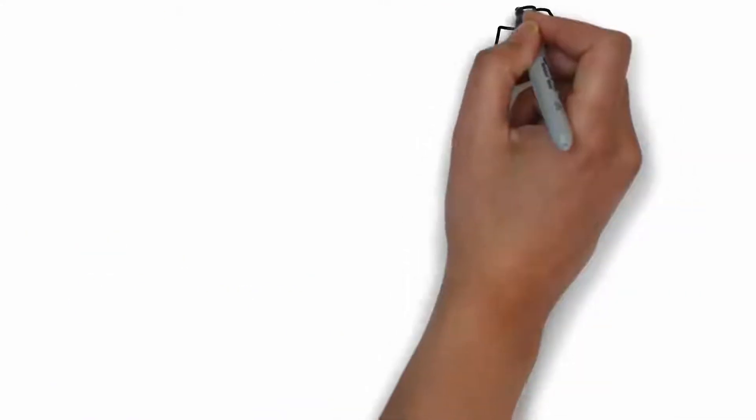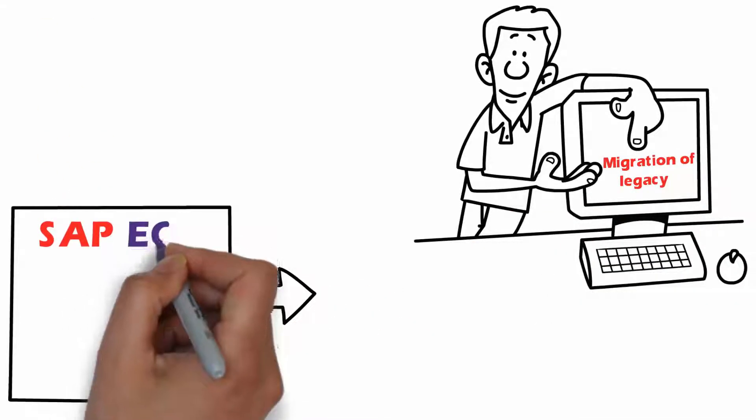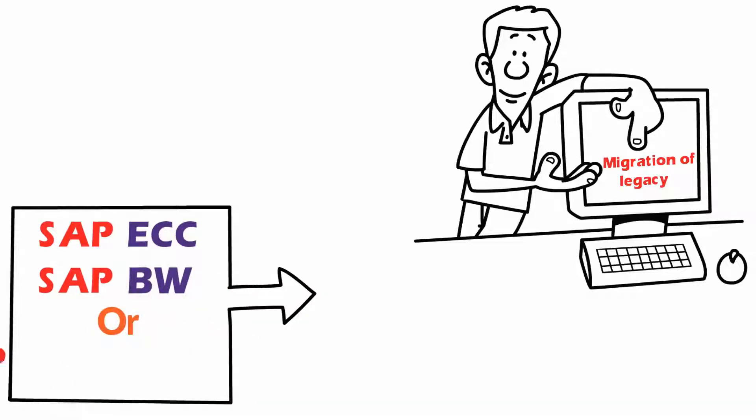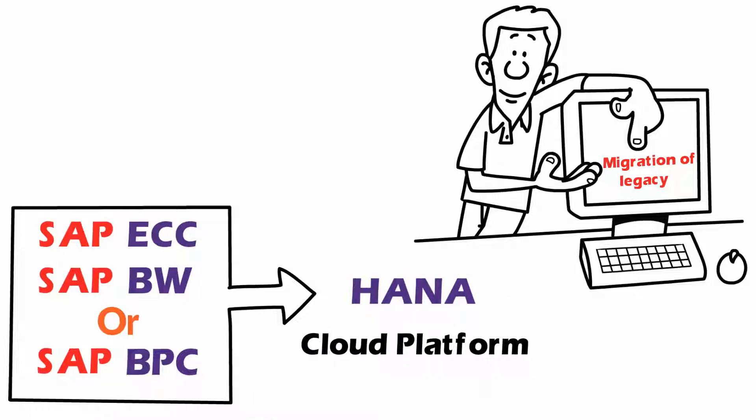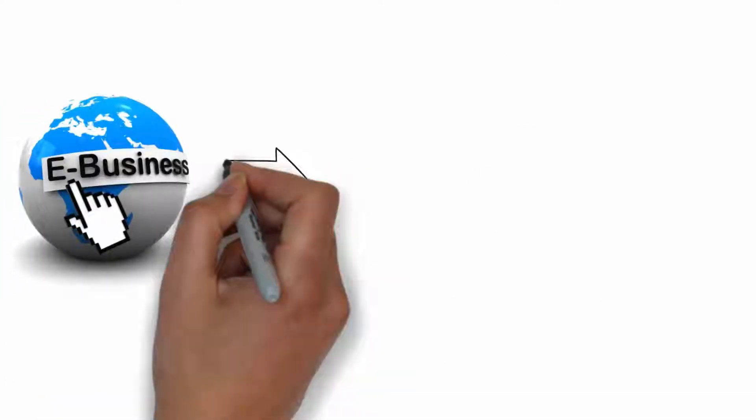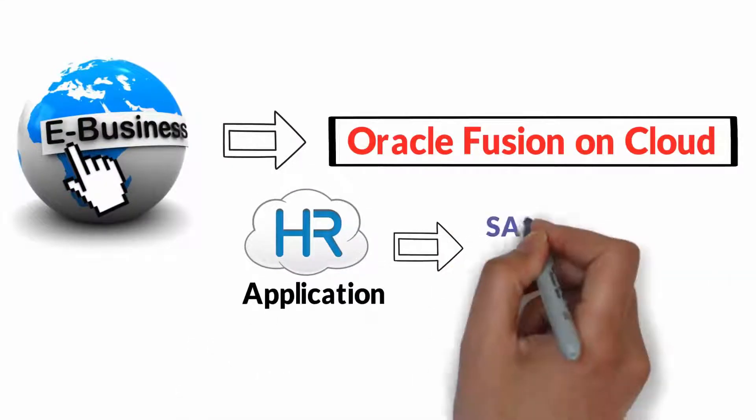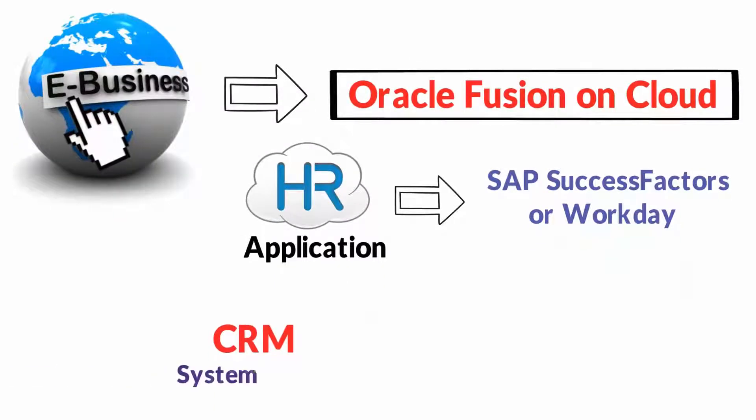Examples of such migrations include migration of legacy SAP ECC, SAP BW or SAP BPC applications to HANA Cloud Platform, Oracle E-Business Suite to Oracle Fusion on Cloud, Legacy HR application to SAP SuccessFactors or Workday, and Legacy CRM system to Salesforce.com.